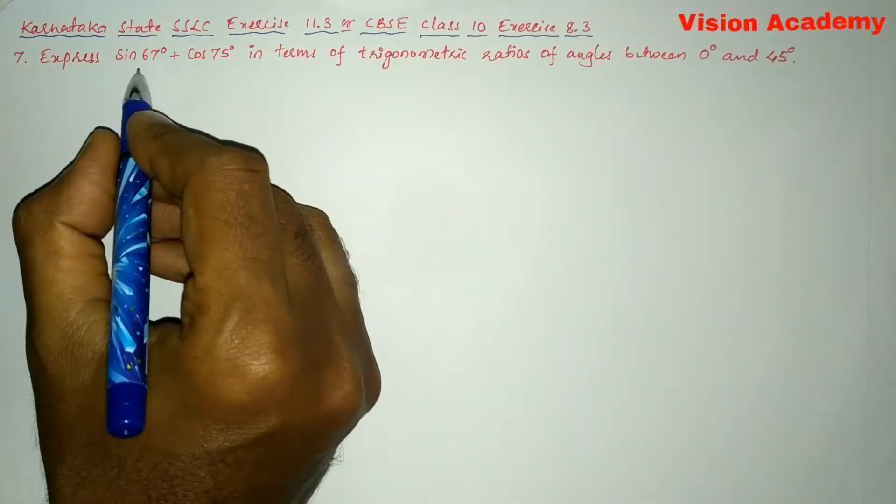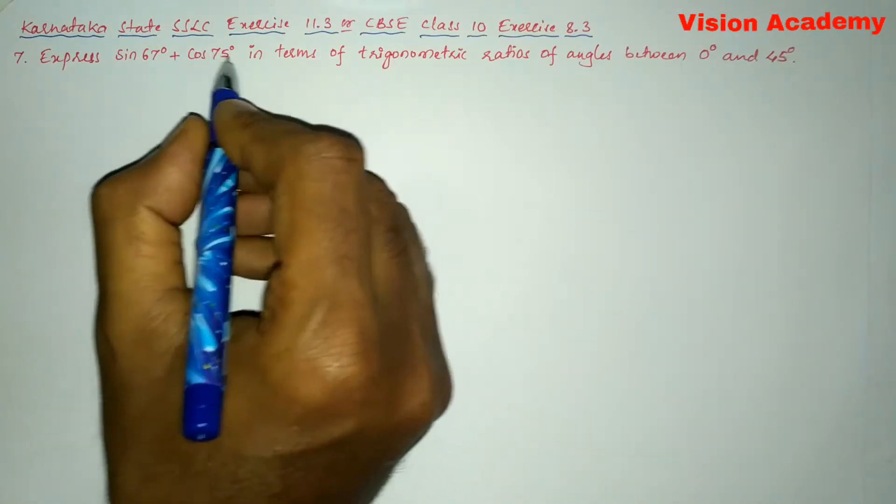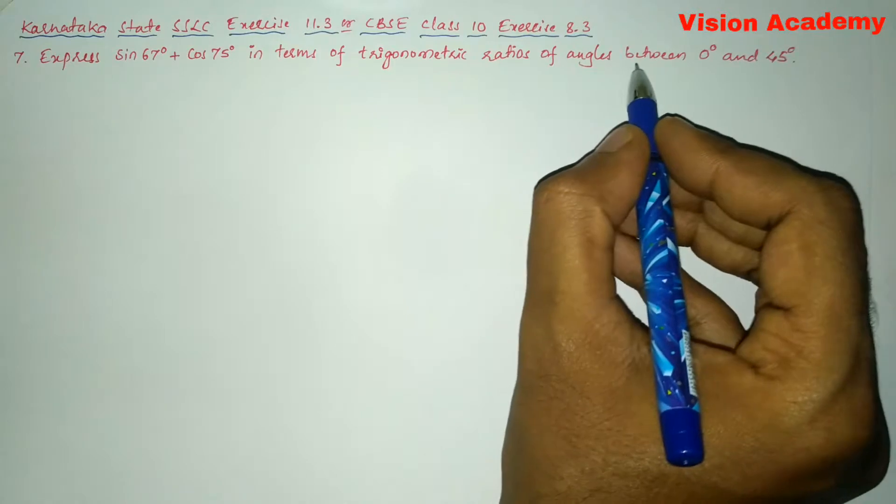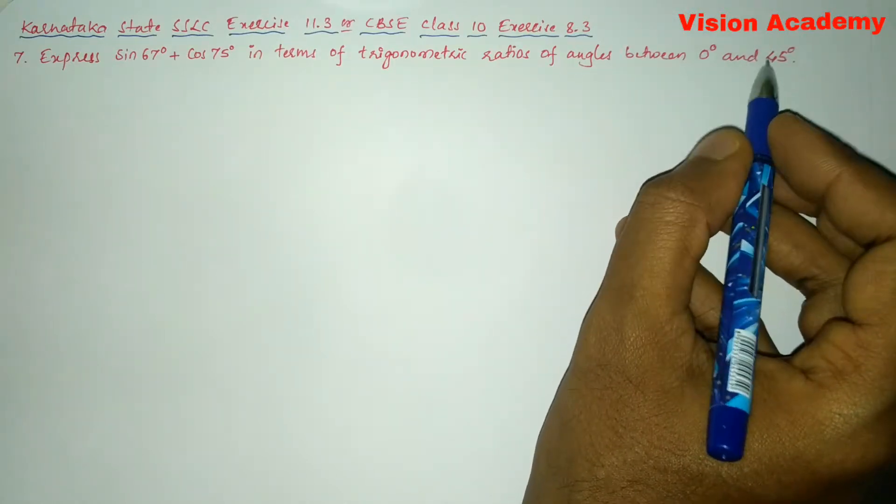Question number seven, express sin 67 degree plus cos 75 degree in terms of trigonometric ratios of angles between zero degree and 45 degree.